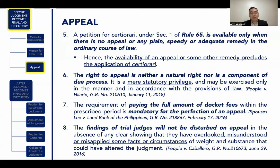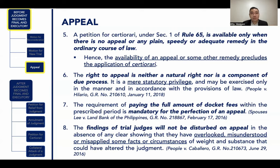A petition for certiorari under Rule 65 is available only when there is no appeal or any plain, speedy, adequate remedy in the ordinary course of law. The availability of an appeal or some other remedy precludes the application of certiorari. When you file a petition for certiorari, it must be alleged that there is no appeal or no plain, speedy, or adequate remedy in the ordinary course of law; otherwise, your petition for certiorari shall be dismissed. The right to appeal is neither a natural right nor a component of due process — it is a mere statutory privilege, and may be exercised only in accordance with the provisions of the law.